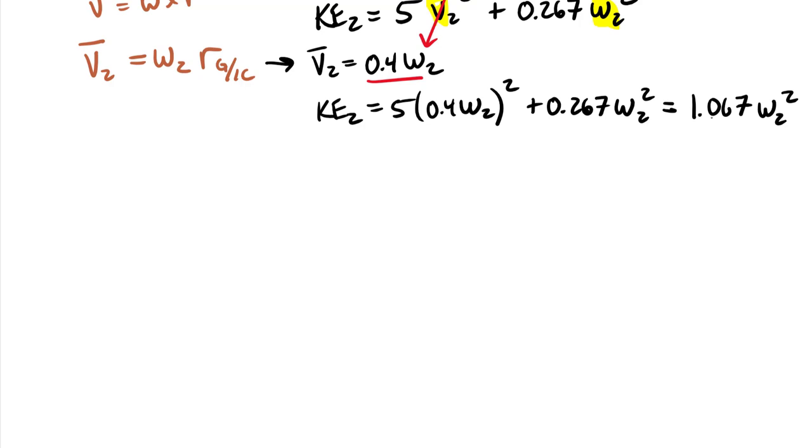Because this is a kinetics problem, we need a free body diagram. Every kinetics problem needs a free body diagram. Here is my normal force at B, a normal force at A perpendicular to the wall. I have my 50 newton force pulling horizontally to the left, and a weight force, 10 kilograms times 9.81 meters per second squared, the gravitational constant for SI units.